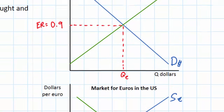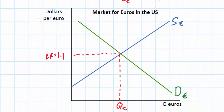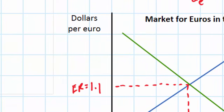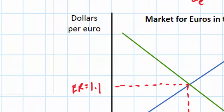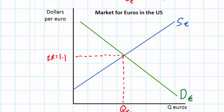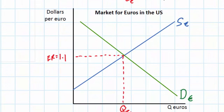In the graph on the bottom we have the market for euros in the United States. The value of euros in the US is expressed in terms of dollars, so our vertical axis is labeled dollars per euro. We can see that the exchange rate in the US for euros is 1.1 dollars per euro. The green line represents Americans' demand for euros and the blue line represents the supply of euros in the United States forex market.